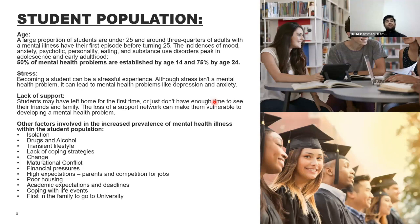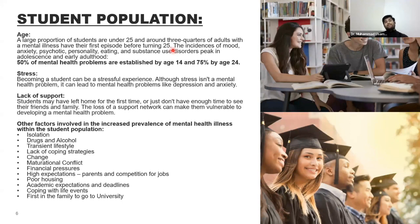Regarding age as a factor: the student population is often under 25, and around three-quarters of adults with a mental illness have their first episode before turning 25. Many female teenagers go through psychiatric issues during puberty, and many teenagers face challenges related to hormonal, psychological, social factors, living conditions, and household environment.